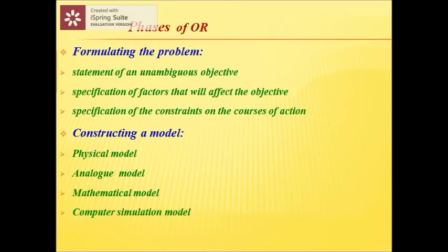In this phase, we have three components to pay attention to. The first component is statement of unambiguous objective. It is important to define the scope of objective along with the specification in order to establish limits for the analysis to be carried out.